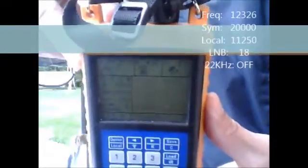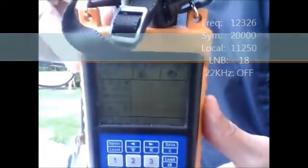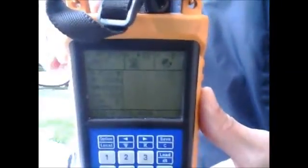The second is frequency rate 12326, symbol rate 20,000, local 11250, 18 volts with 22 off. I find the 18 to be more reliable as it worked on all SWIM-3 LMBs, whereas the 13 sometimes did not.